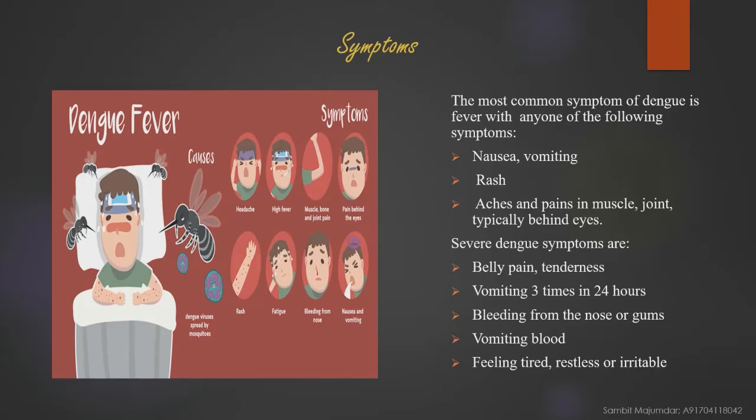The most common symptom of dengue is fever, along with any one of the following: vomiting, nausea, rash, pain in muscle and joint, typically behind the eyes. Severe dengue symptoms include tenderness, belly pain, vomiting three times in 24 hours, bleeding from nose or gums, vomiting blood, and feeling tired, restless, or irritable.